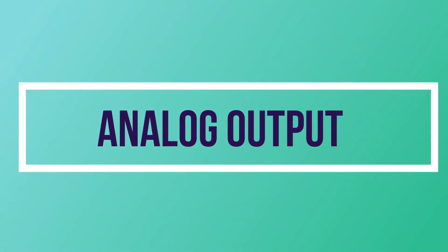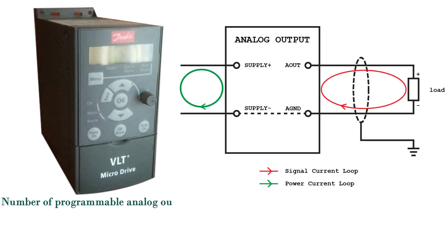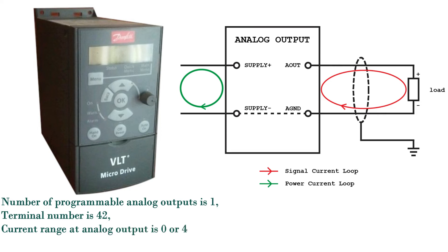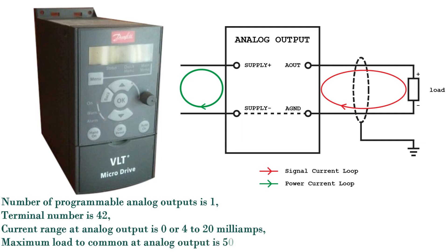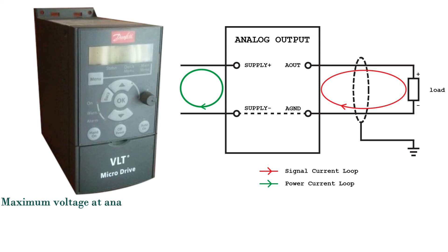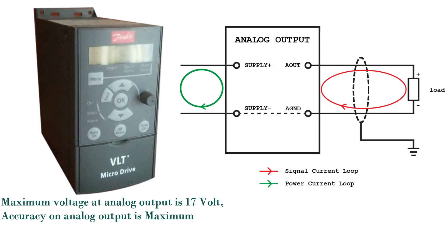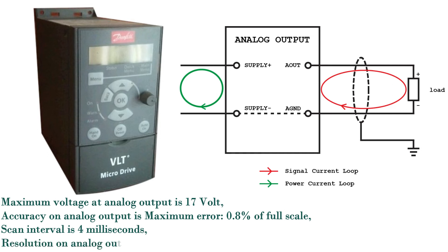Analog output: number of programmable analog outputs is 1; terminal number is 42. Current range at analog output is 0 or 4 to 20 milliamps. Maximum load to common at analog output is 500 ohm. Maximum voltage at analog output is 17 volt. Accuracy on analog output is maximum error 0.8% of full scale. Scan interval is 4 milliseconds; resolution on analog output is 8 bit.